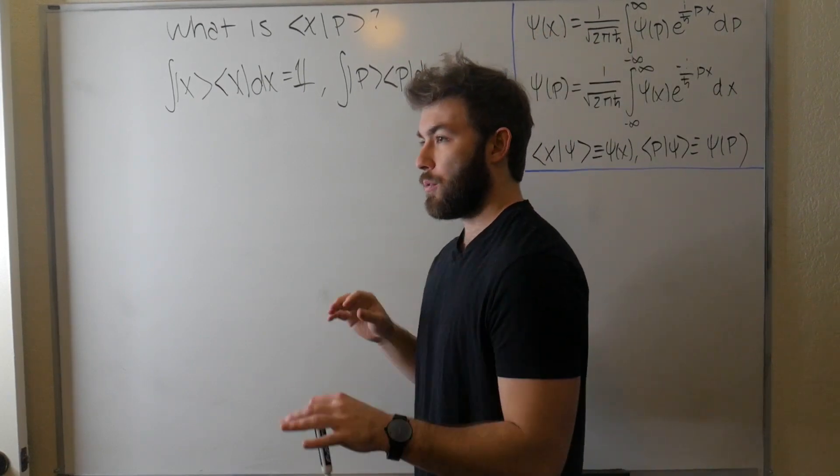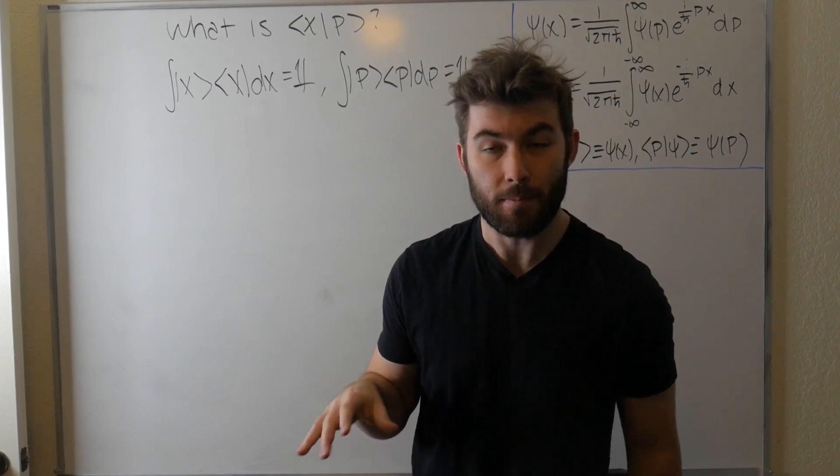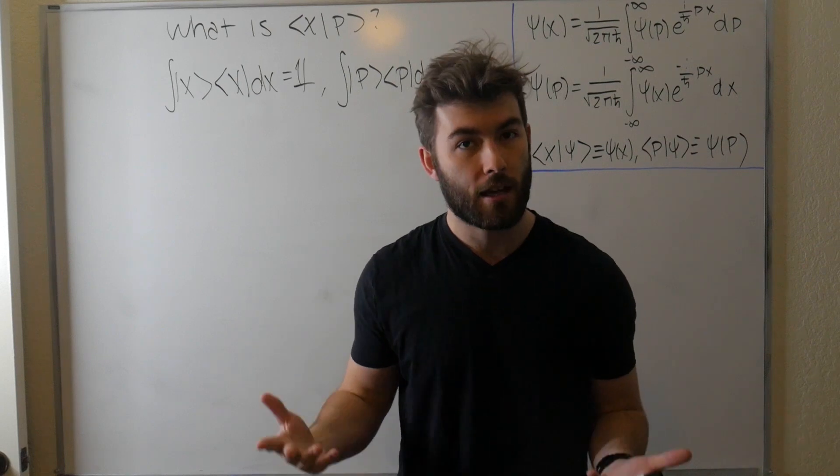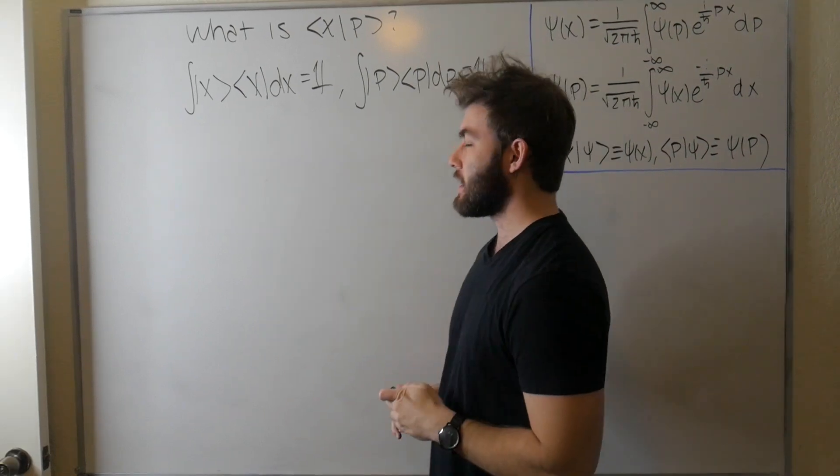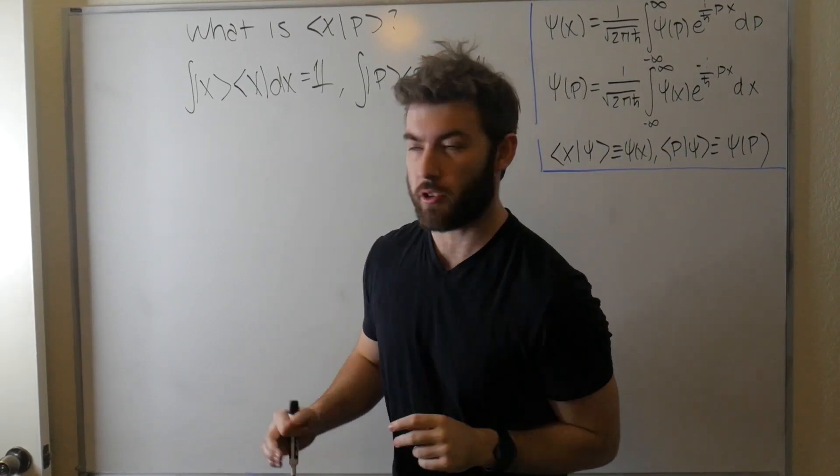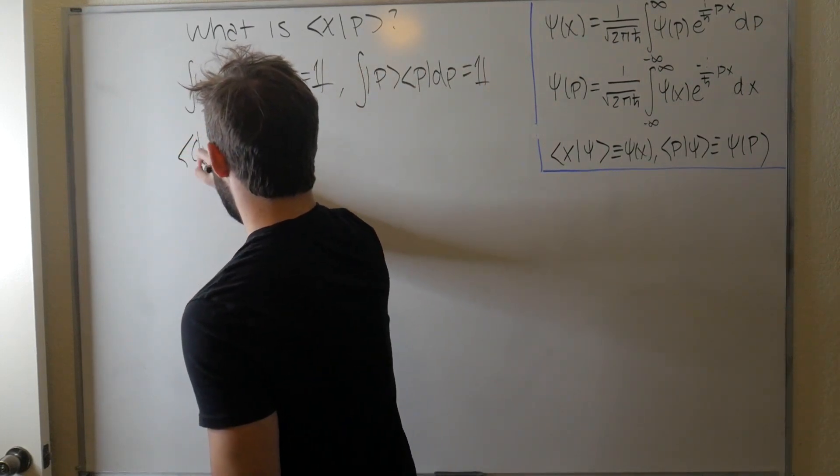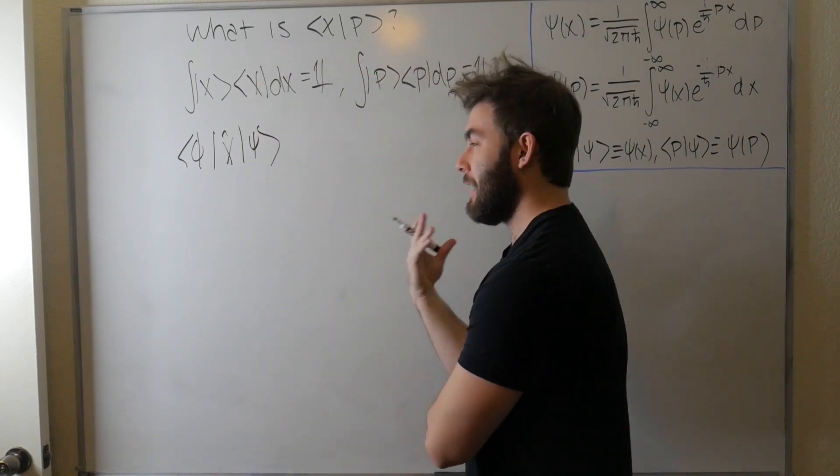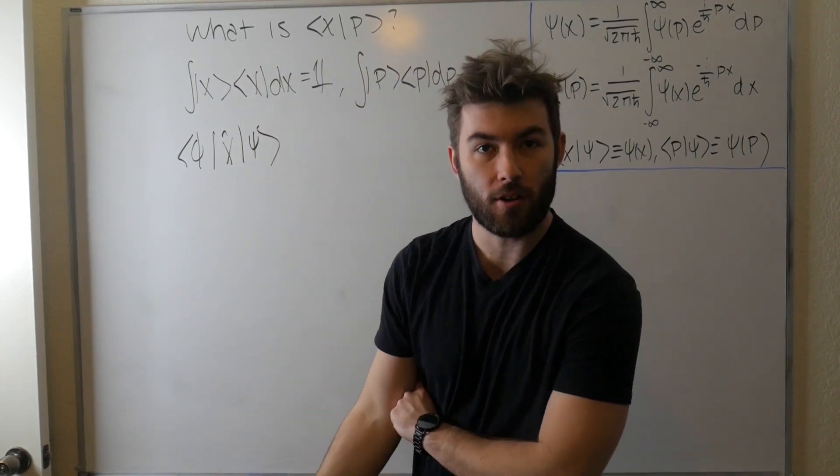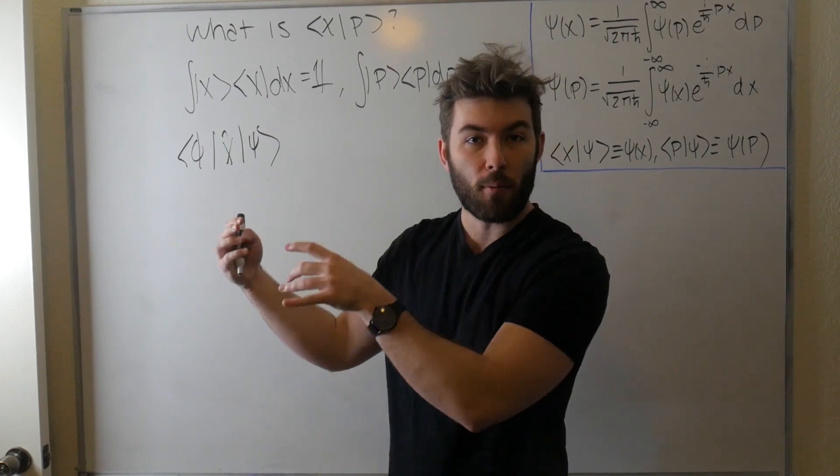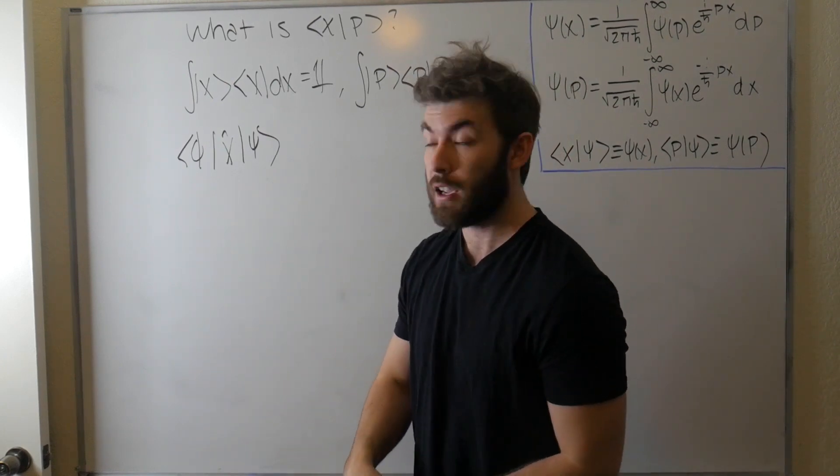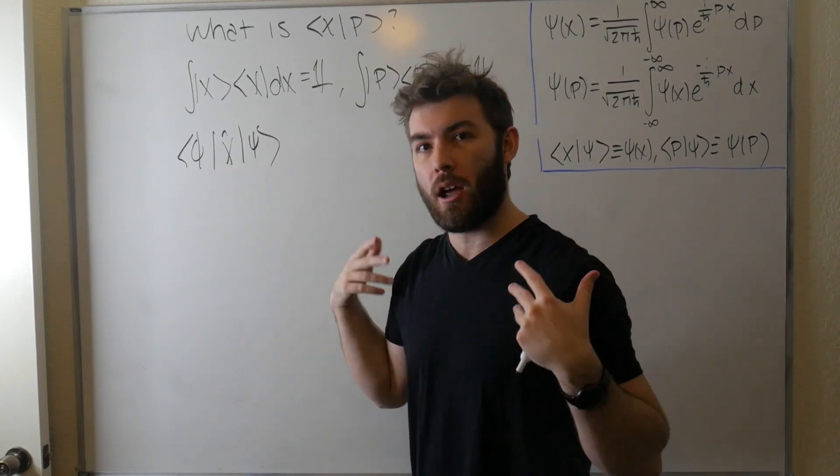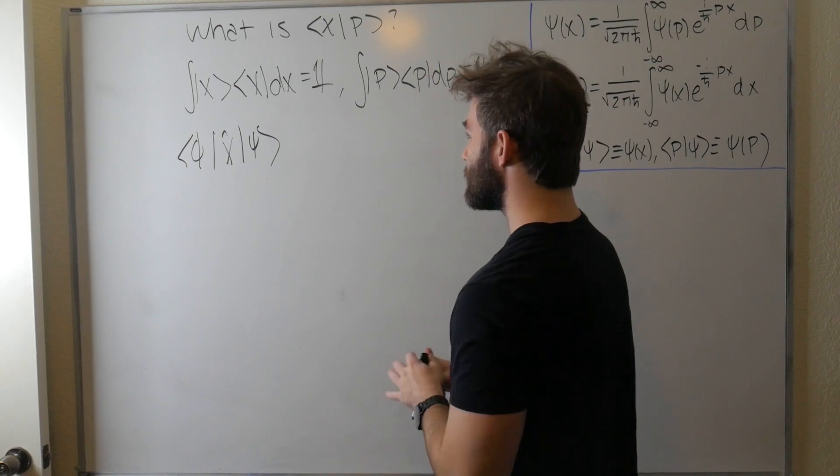Okay, when in doubt with these whole Dirac notation problems, always insert completeness, because what you effectively do with this is it's a way of changing your basis or representing something in a given basis. Let's go ahead and calculate the matrix elements of the position operator. So we'll have some state we'll call it phi and x hat and psi. We want to know what this is. Well, we have to specify a given representation. Are we going to do this in coordinate space or momentum space?